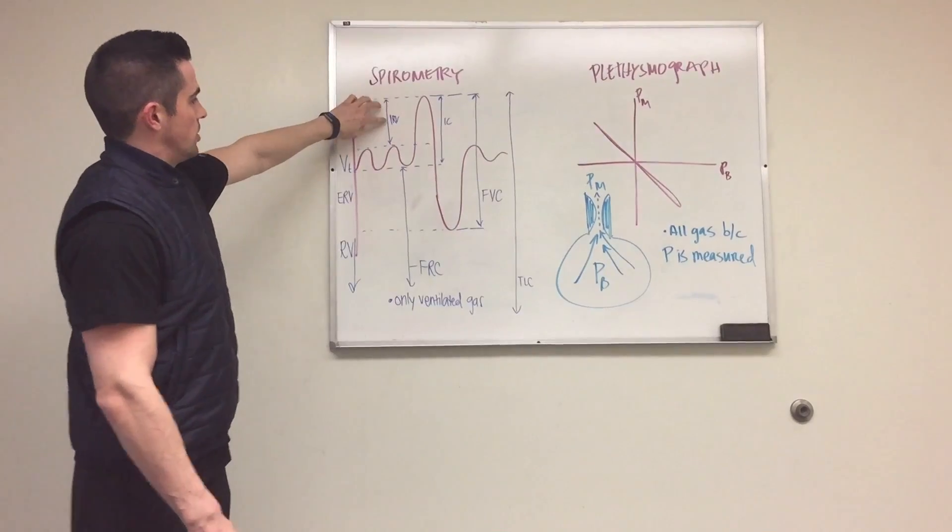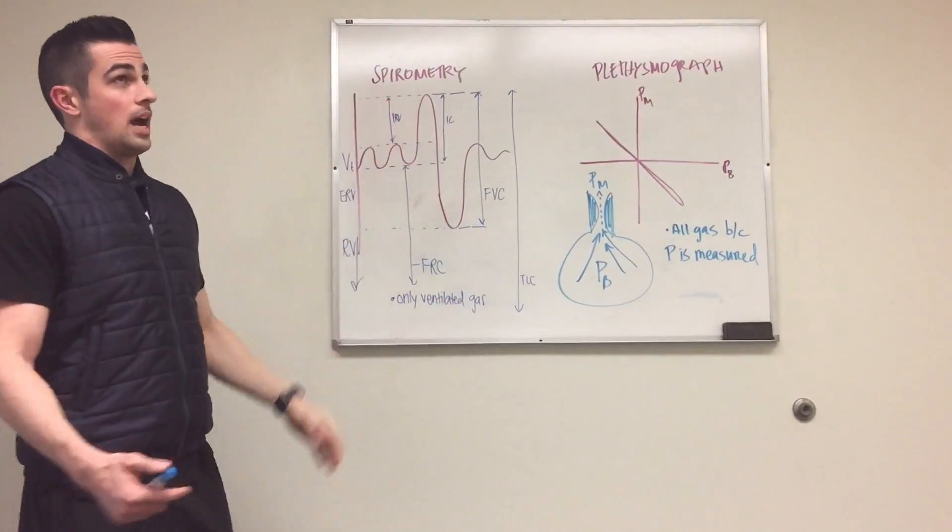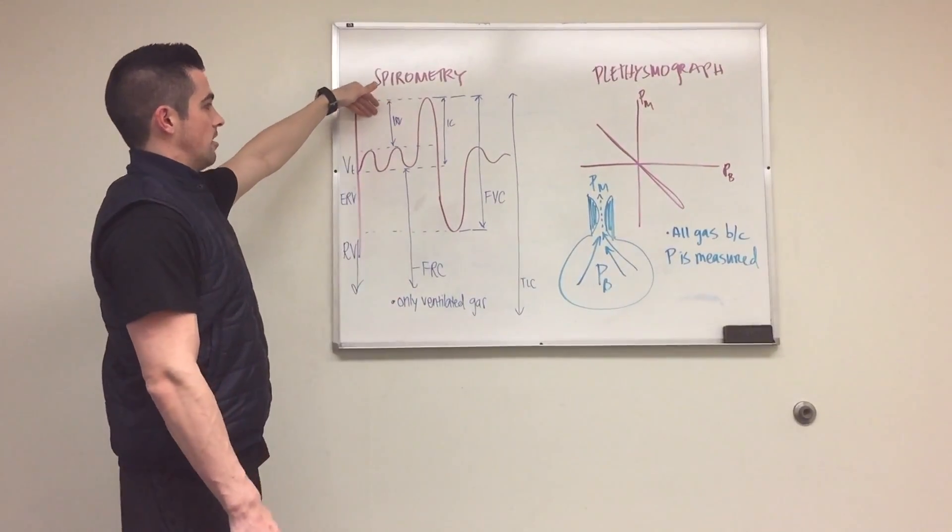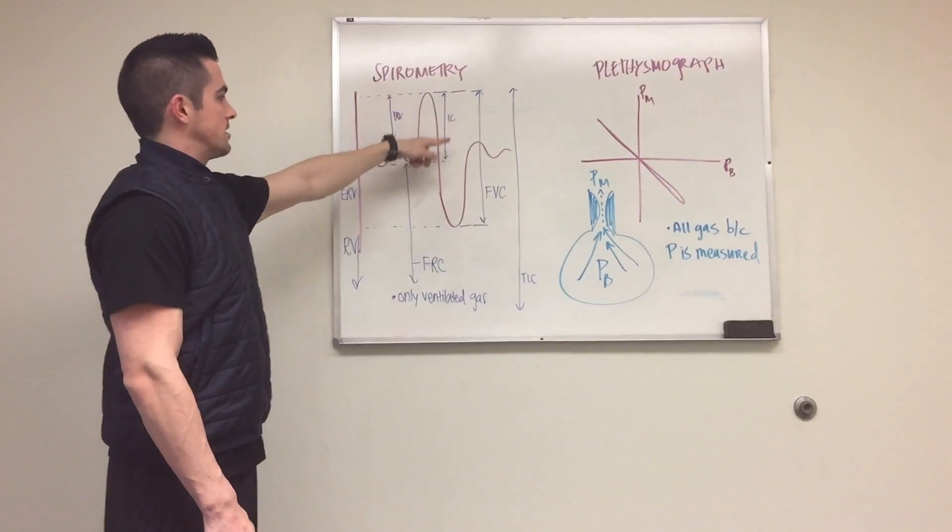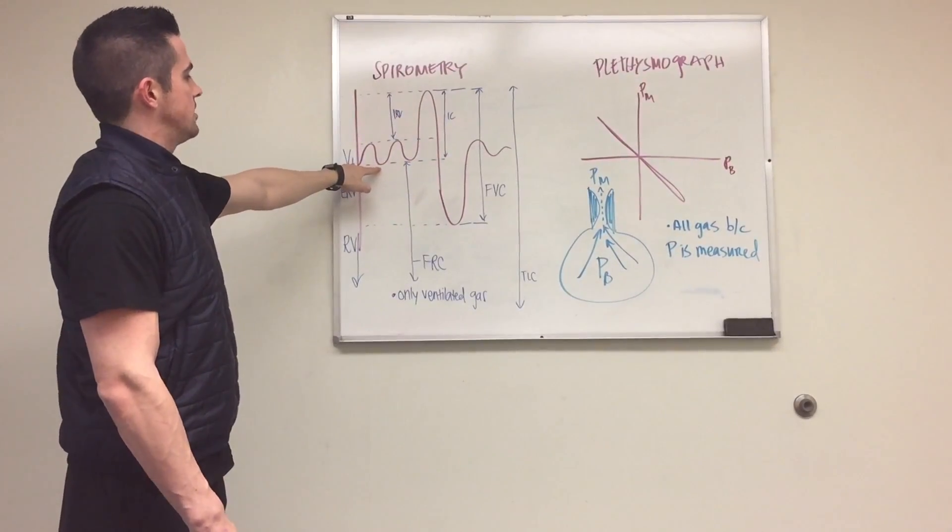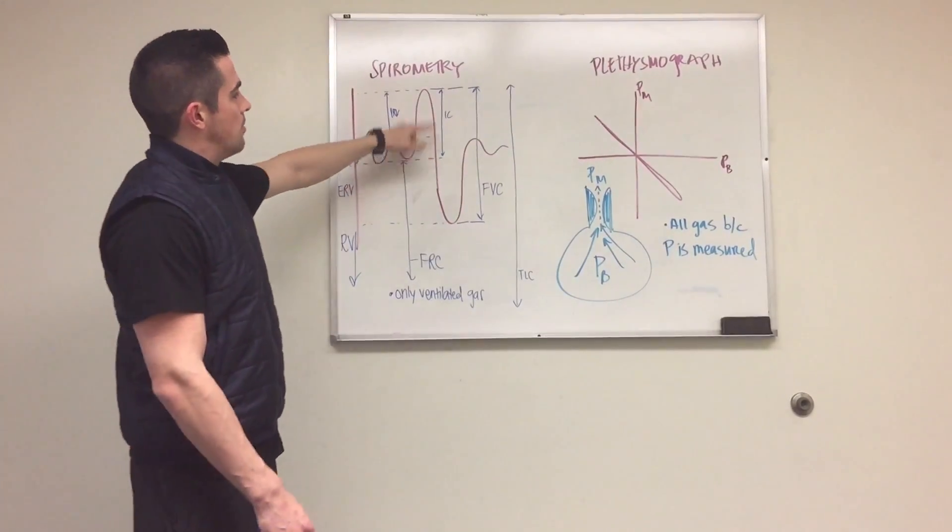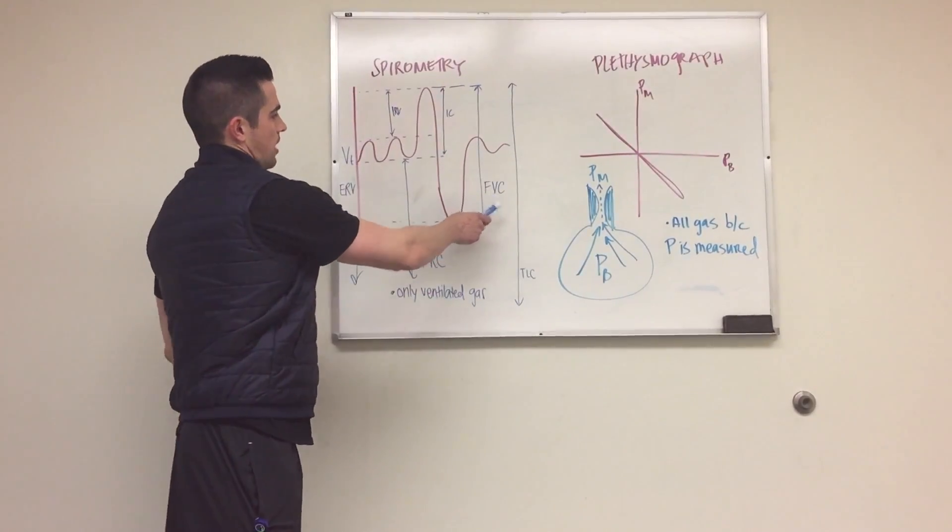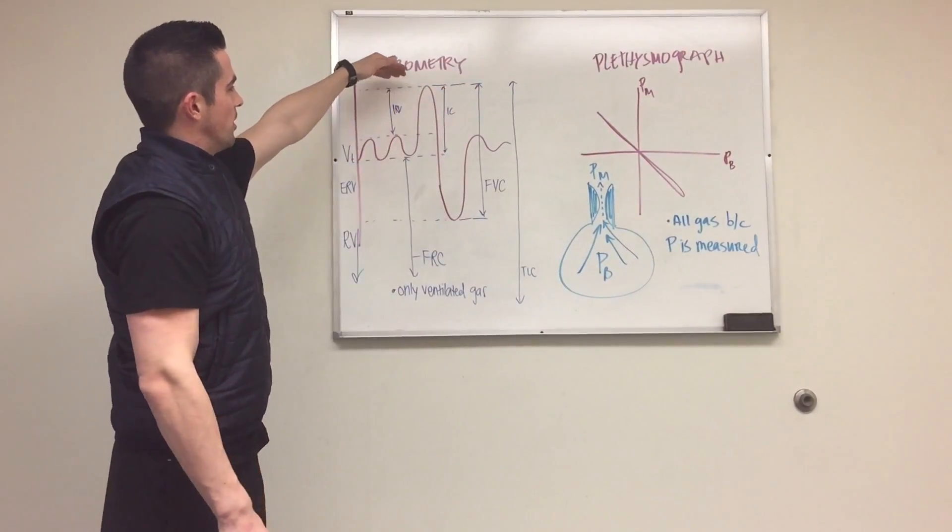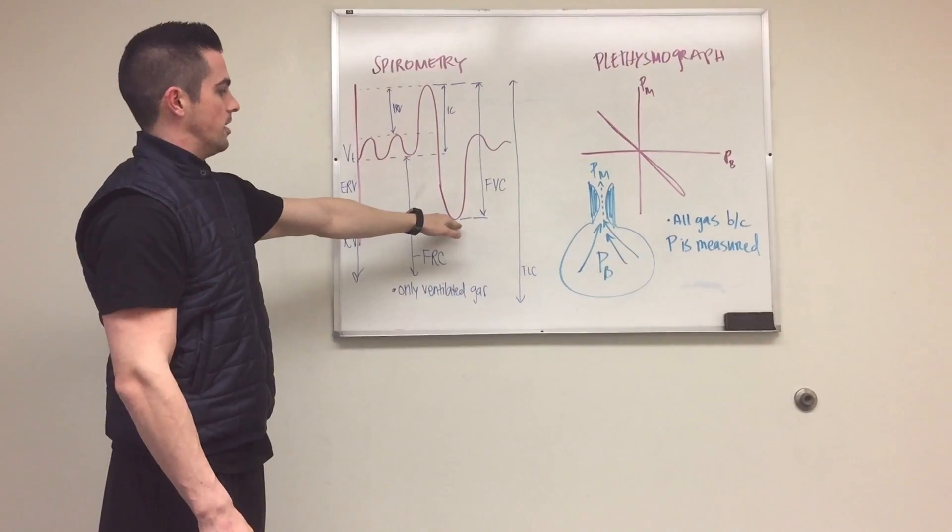Here's our inspiratory reserve volume. This is the amount you can inspire beyond tidal volume. Inspiratory capacity is, at tidal volume expiration, how much you can inspire. Your forced vital capacity is your peak inspiration and peak expiration. Your total lung capacity is everything, all the air in your lungs.